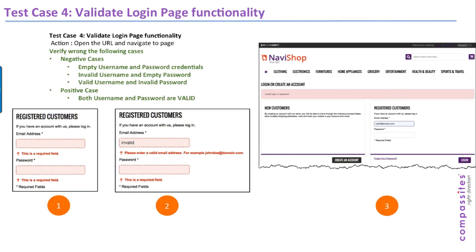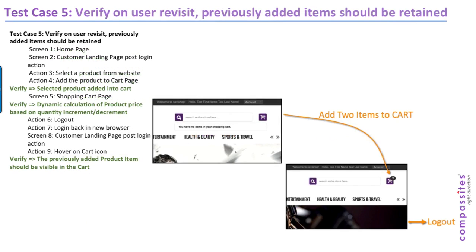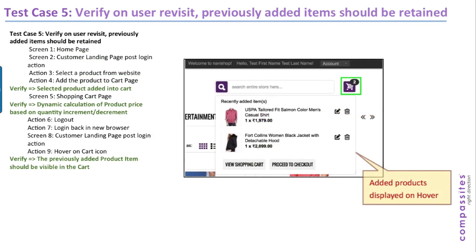The fourth test case is about a successful login. Our approach starts with the most negative case — invalid username and invalid password — then moves towards the positive case, ensuring all relevant messages are provided by the application at each step. The fifth test case involves logging into the application, searching for a couple of products, adding them to the cart, logging out, logging back in, and verifying that the two previously added items are still available in the cart.